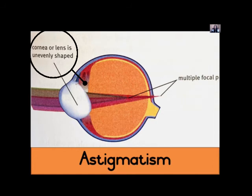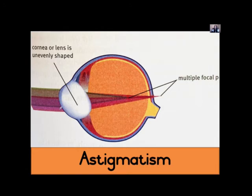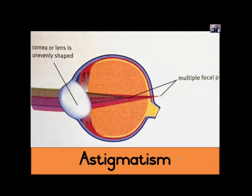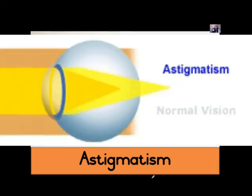Now let's look at astigmatism. The problem lies with the cornea or the lens being irregularly or unevenly shaped — most commonly the cornea. The cornea is very unevenly shaped, and this results in light rays focusing on many points on the retina instead of just one focal point. So when light rays enter the eye, they create many focal points on the retina instead of a single clear point.